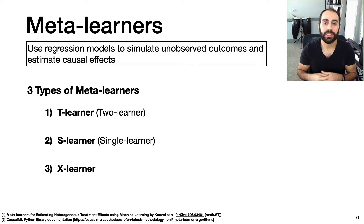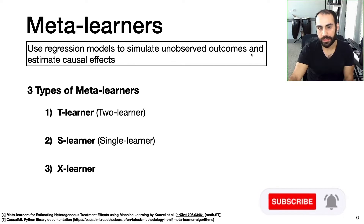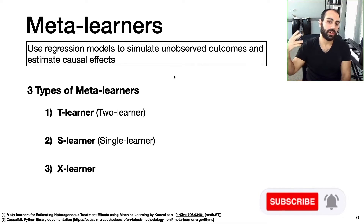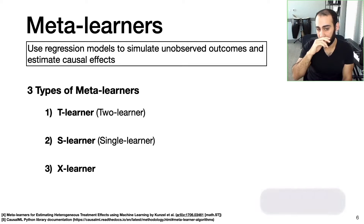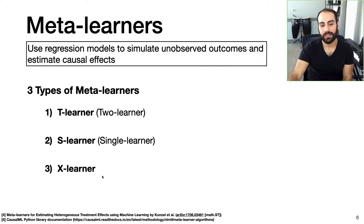The final regression-based approach is the so-called meta learners. What these do is use regression models to simulate unobserved outcomes and estimate causal effects. There are several types of meta learners; in this video I'll talk about three: the T learner or two-learner, the S learner or single learner, and the X learner.